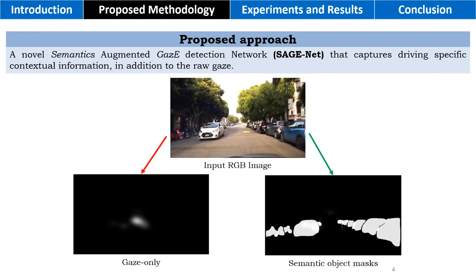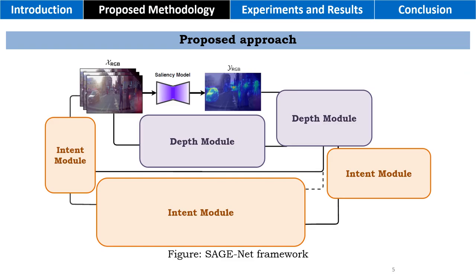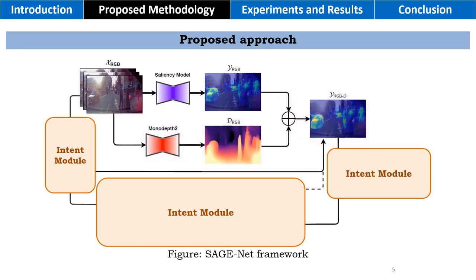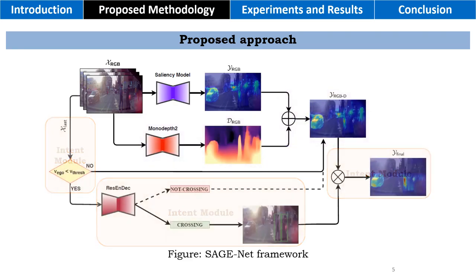To overcome these, we propose a novel semantically augmented gaze detection approach, which captures semantic context in the image while retaining the gaze input as well. We further extend this to a full stack framework where, in addition to the saliency branch, we also consider a depth module and a pedestrian intent module.